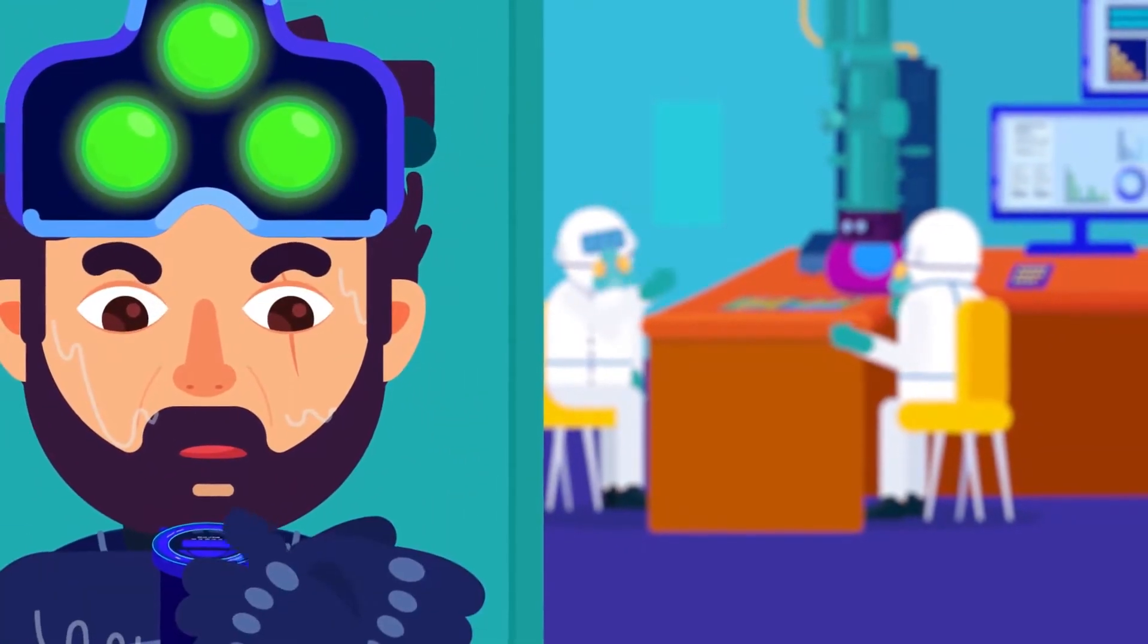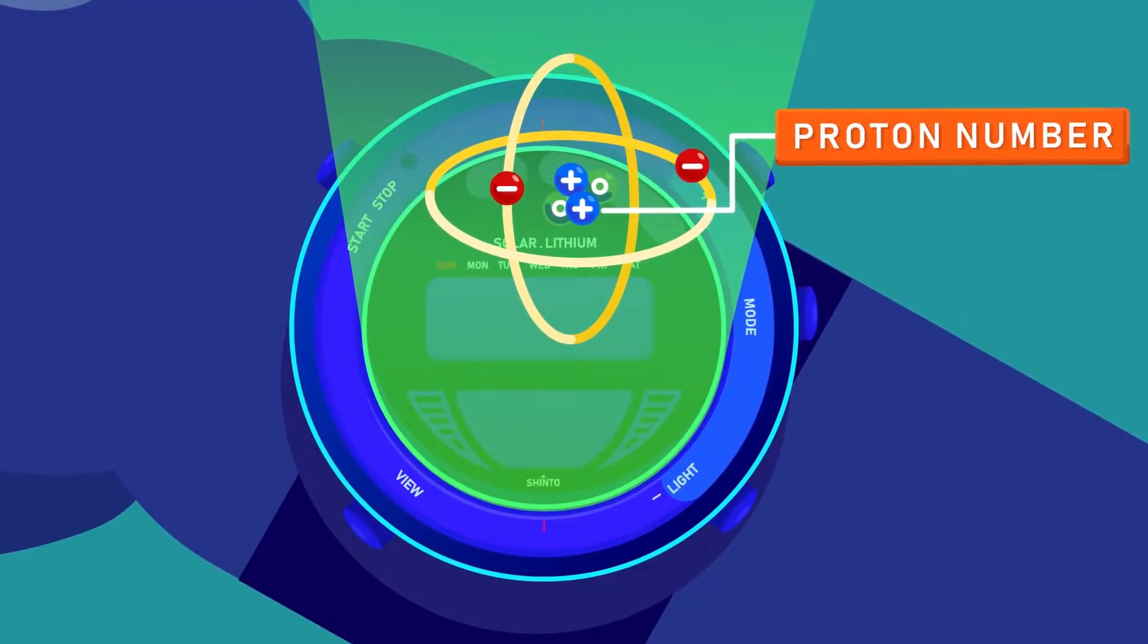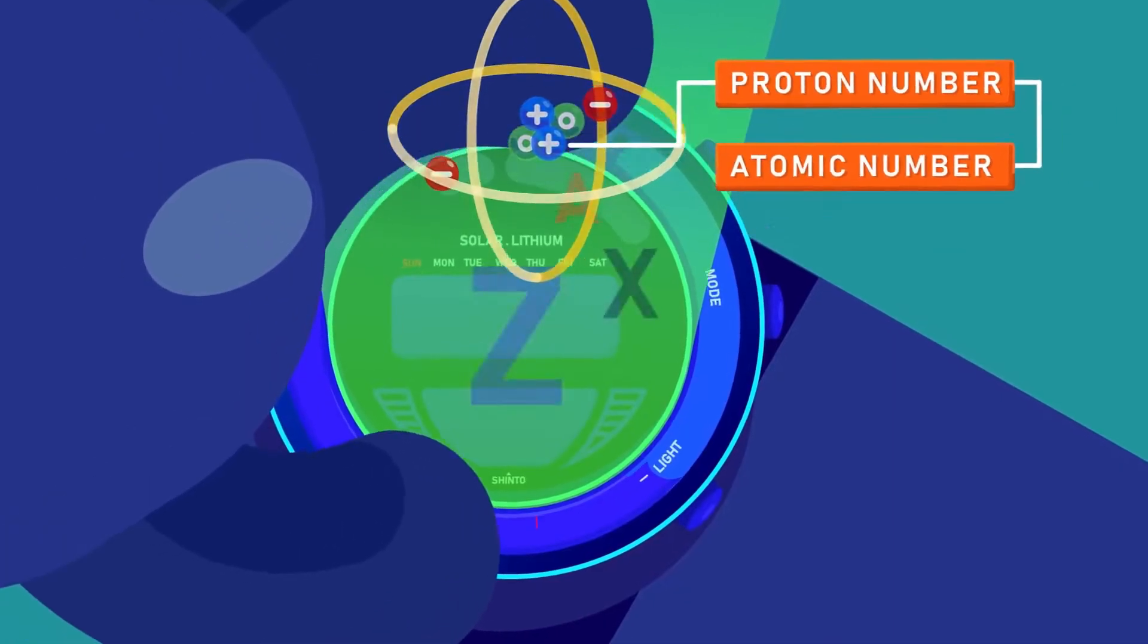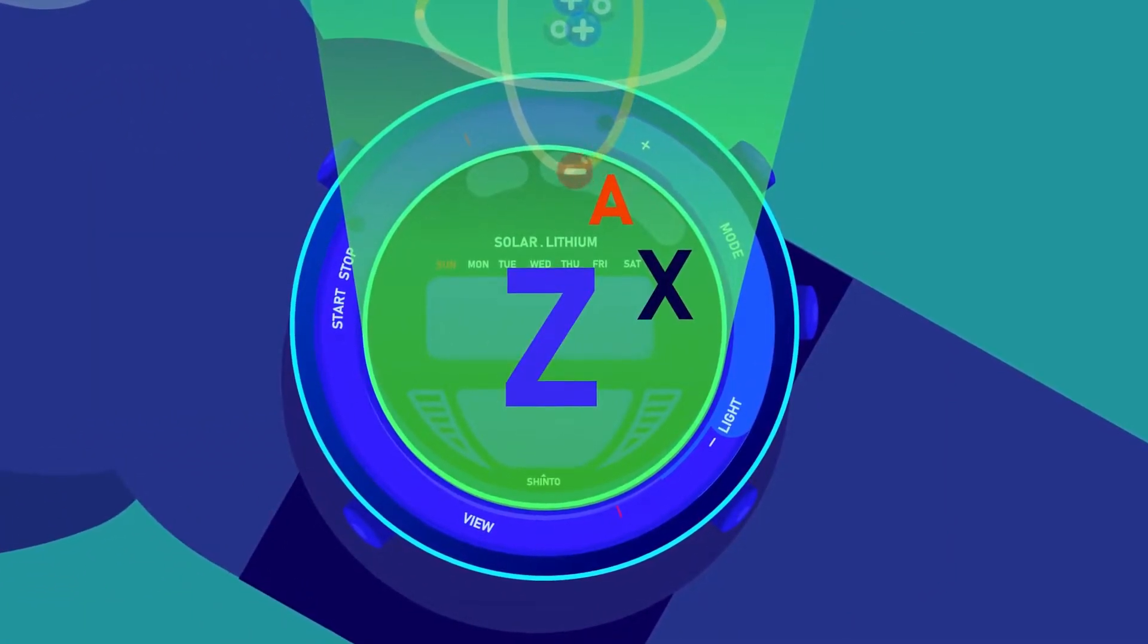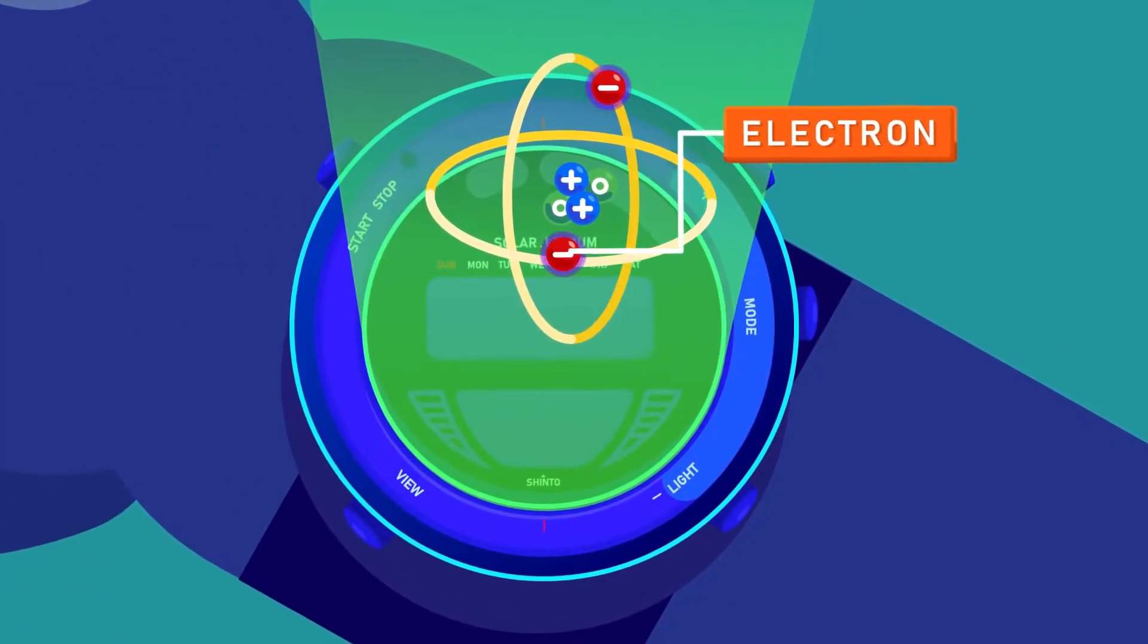Proton number. The proton number is the number of protons in an atom. The proton number is also called the atomic number. It is represented by the symbol Z. Since atoms are electrically neutral, the proton number also tells us the number of electrons in the atom.